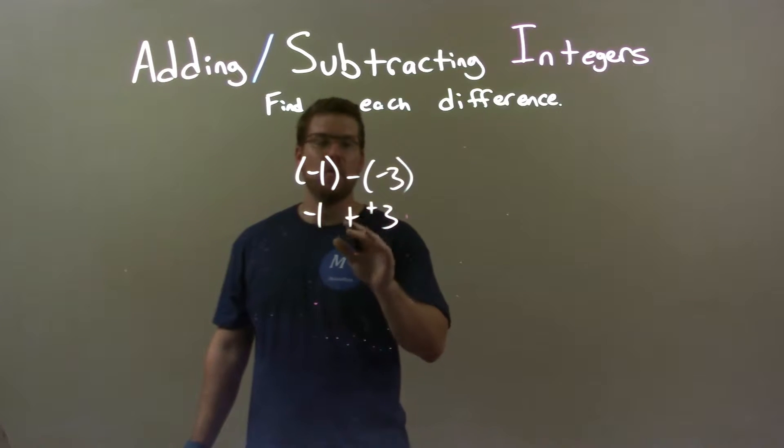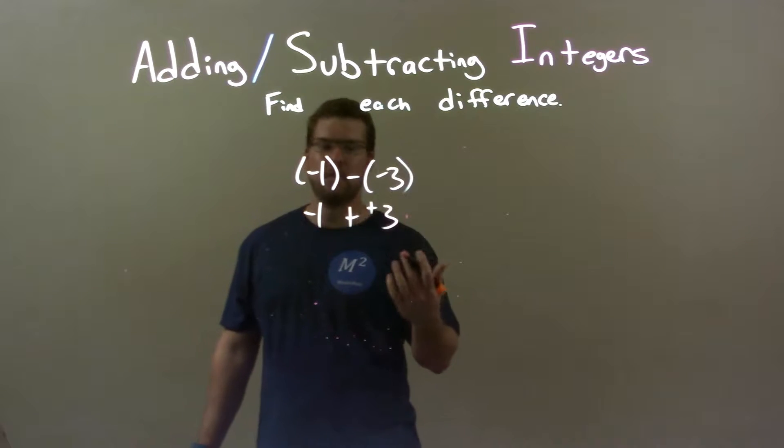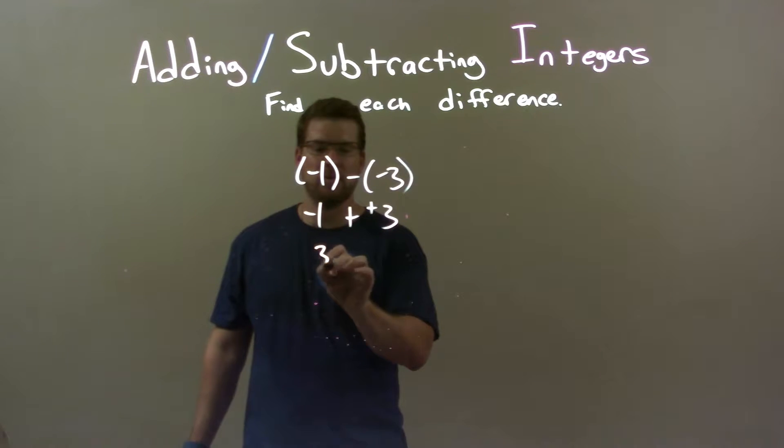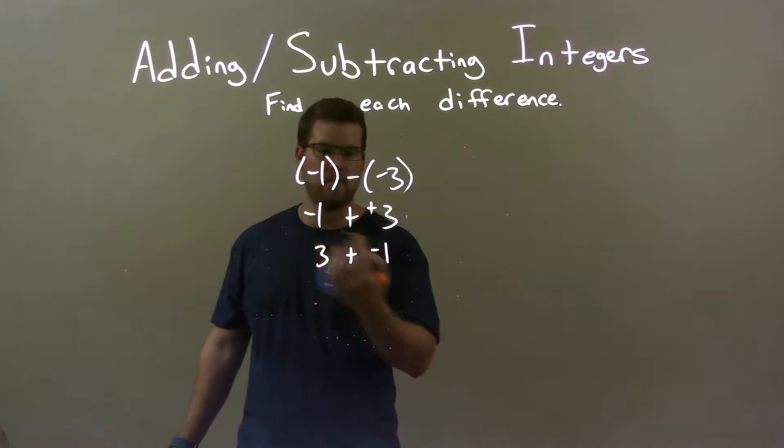And we know with addition we can rearrange it. So, I'm going to rearrange this to be 3 plus a negative 1, right? Because negative 1 is right there, we're adding 2 numbers.